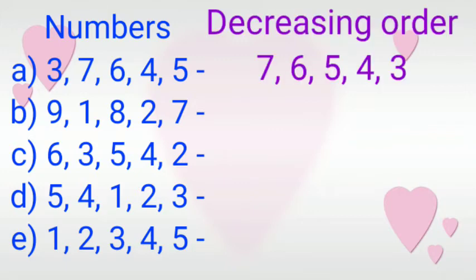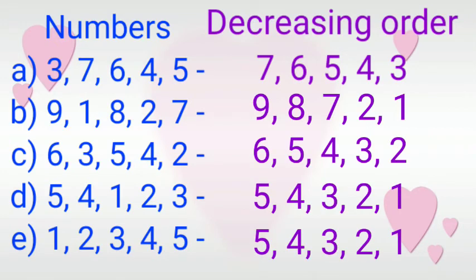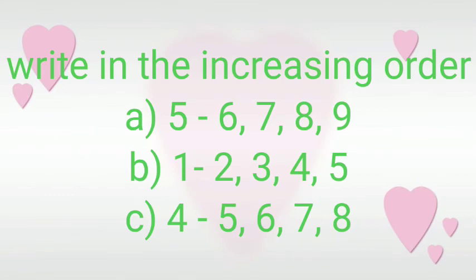7, 6, 5, 4, 3. Just like we arrange the numbers in decreasing order. B number is 9, 1, 8, 2, 7. Here bigger number is 9. At first write 9, then 8, 7, 2, 1. Good, this is in decreasing order. As usual, all the other numbers solve in decreasing order.